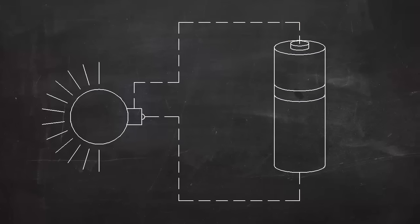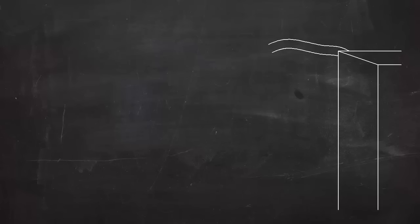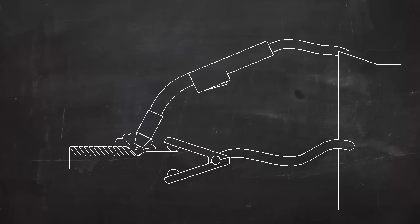In an electric circuit, the current flows in a loop. In MIG welding, the current has to flow in a complete circle from the machine, to the torch, into the work, and back to the machine. A work lead is clamped to the work to complete the circuit, from the workpiece back to the machine.